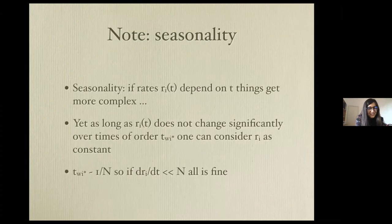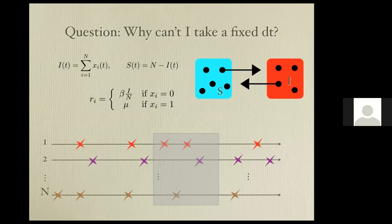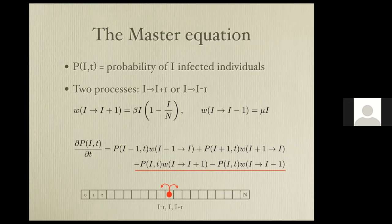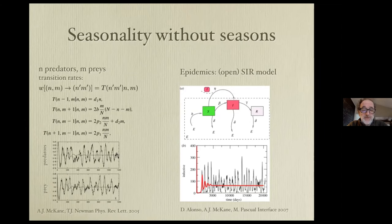Another question: the picture showing divergence between deterministic and stochastic predictions seems to require the deterministic curve to be a stable spiral. Is that always required? No — for example, for a simple SI model you don't get these oscillations. There are specific conditions on the rates that make this phenomenon possible, discussed in the recommended papers.